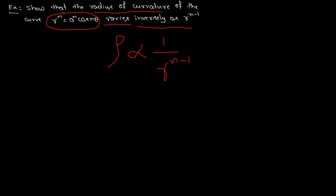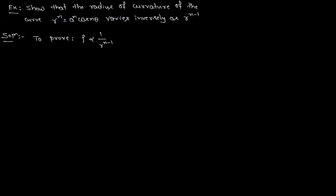This means inversely proportional. If we remove the proportionality sign, we get a proportionality constant. This is what we need to prove: rho is equal to some constant times 1 divided by r to the power n minus 1.